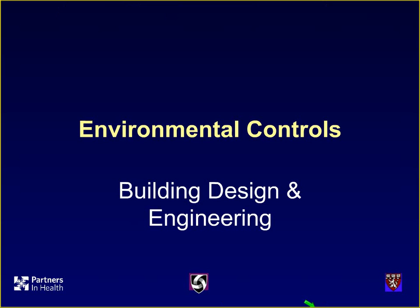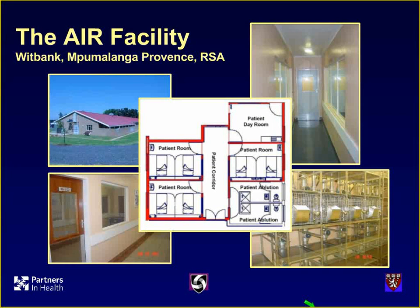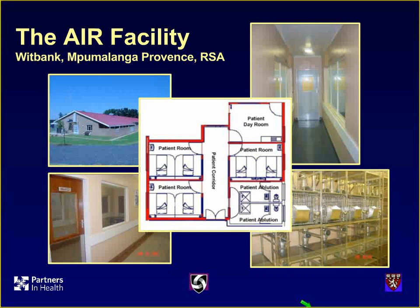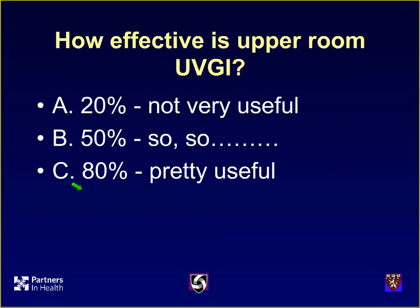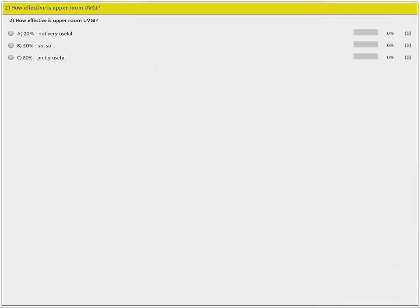On environmental controls: we have a facility near Pretoria, South Africa — the Airborne Infection Research Facility in Pumbulanga — where we study these controls. We have six patient rooms and all the air goes to guinea pig cages where we test the guinea pigs monthly to determine whether they're infected or not. One thing we're anxious to test is ultraviolet air disinfection. Before I tell you the results, I'd like you to tell me how effective you think UV is — 20% not very useful, 50% so-so, or 80% pretty useful?